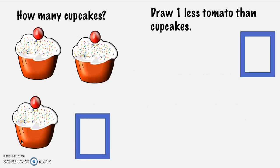As you can see, our screen is split up into two sides. On one side it says: how many cupcakes? And on the other side it says: draw one less tomato than cupcakes. So in order to draw our tomatoes, we need to know how many cupcakes we have to begin with.